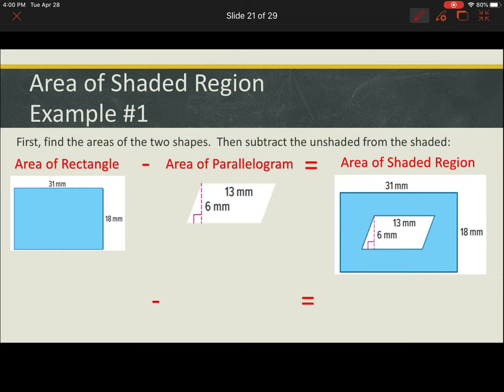The area of a rectangle, we apply the formula base times height, and we get an area for the rectangle of 558 millimeters squared. The area of the parallelogram, again base times height, and we find that to have an area of 78 millimeters squared.